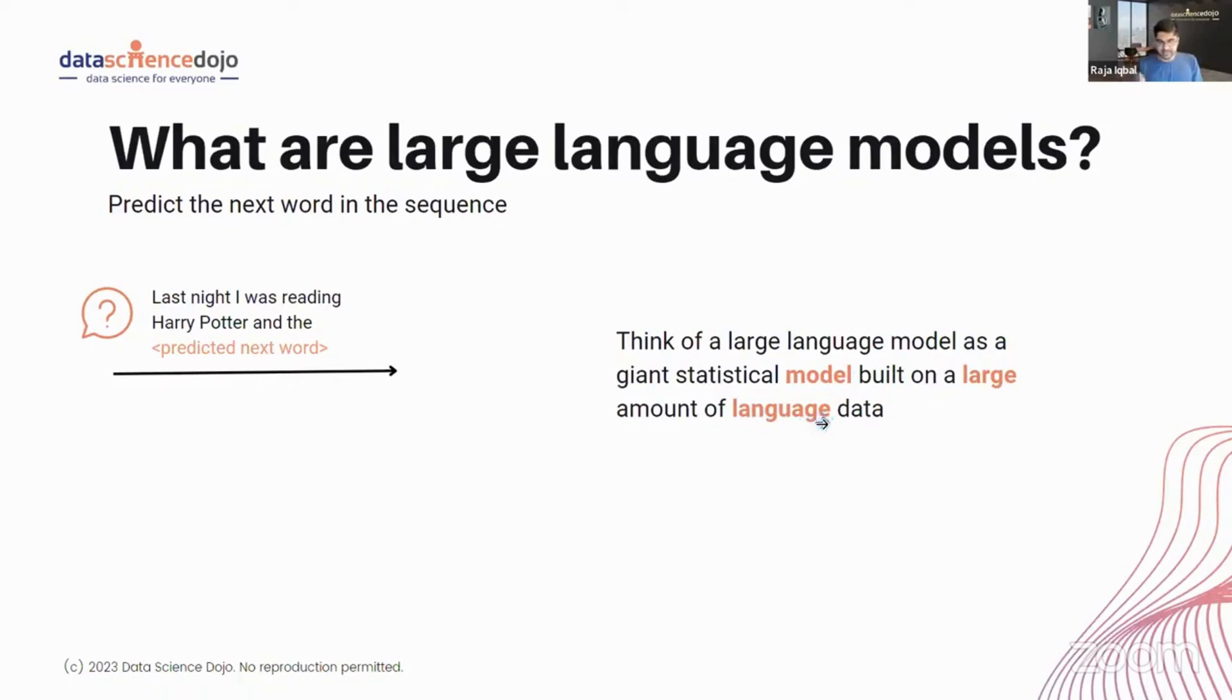So in essence, what it is is probabilities. What is the next most probable word? And that depends on what data the model was trained on.